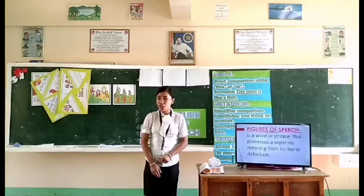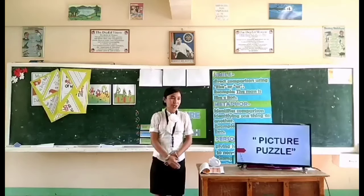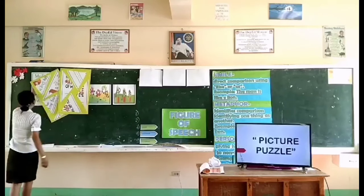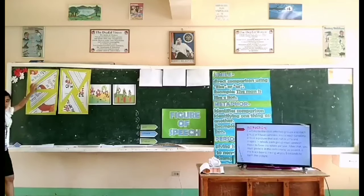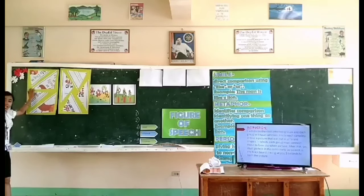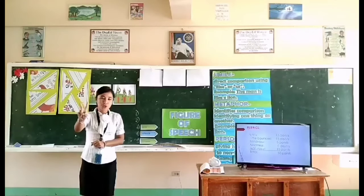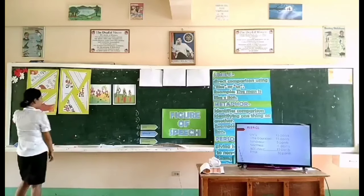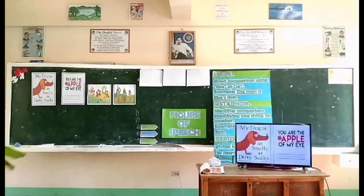It seems that all of you are ready for a new lesson. But before that, we will have an activity called Puzzle Picture. We have here a cartolina. Inside it there are different crafted pictures, and all you need to do is connect them to form the whole picture. I will give you 5 seconds to answer. Time starts now — 5, 4, 3, 2, 1 — time is up. Let's check if your answer is correct. Very good, it seems that all of you got the correct answer.